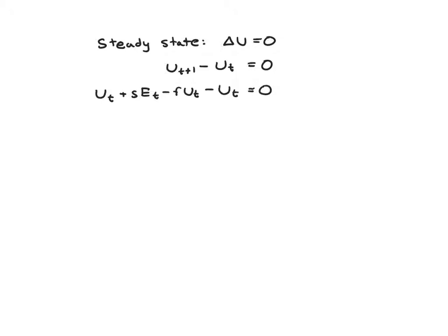The first things we notice are that these u_t's cancel, so really what we're left with is s*e_t minus f*u_t equals zero. Since we have two things, let's get one on each side, so we'll have s*e_t equals f*u_t.